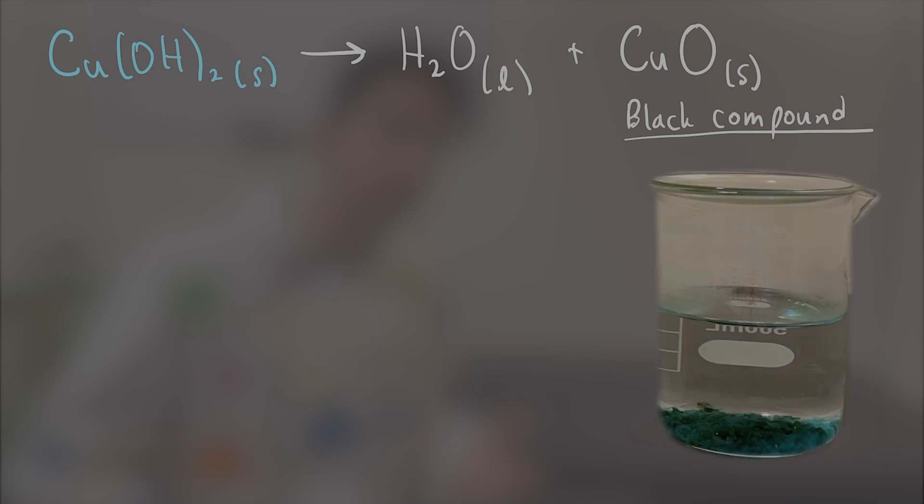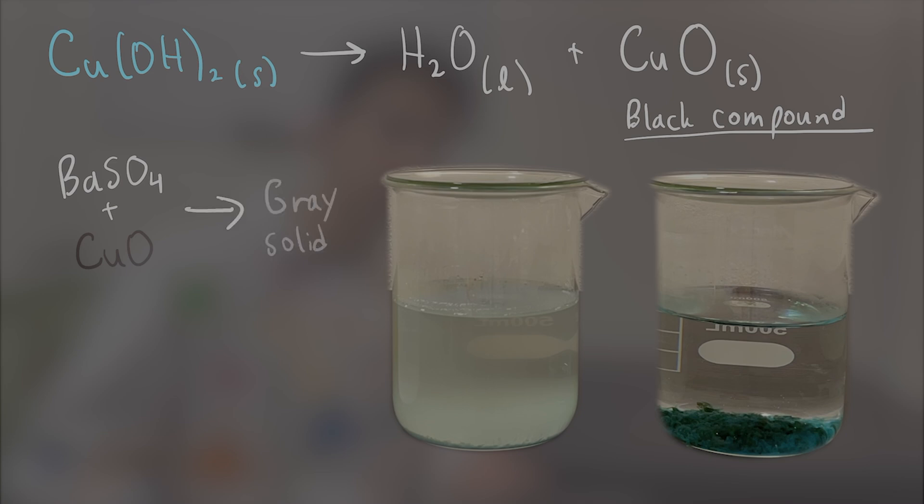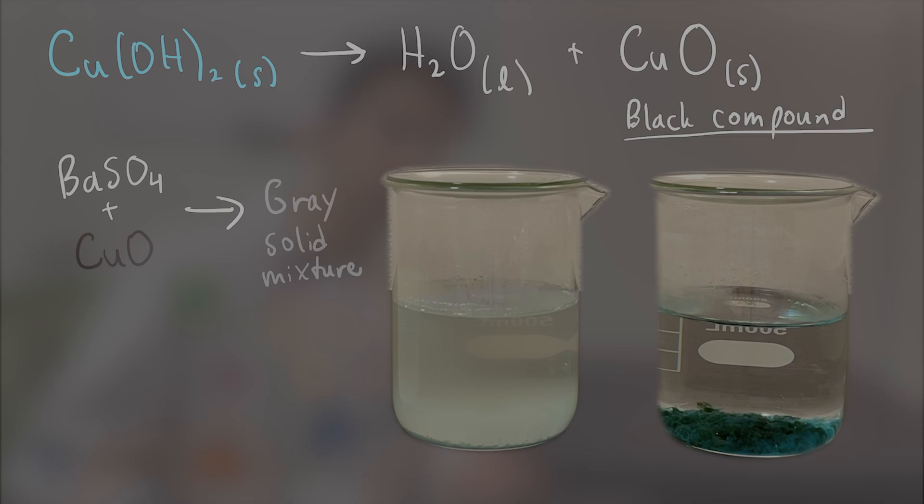Copper hydroxide spontaneously decomposes into water and copper oxide, which is a black compound. That's why the precipitate on the right turned black, and the precipitate in the middle turned sort of a weird bluish gray. The white barium sulfate was mixed with the black copper oxide, which gave it a gray color. With enough time, the two beakers ended up looking like this.